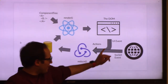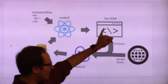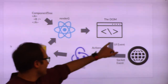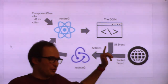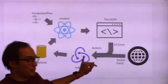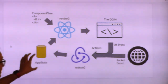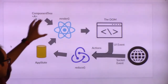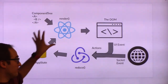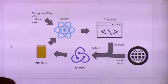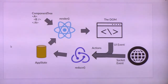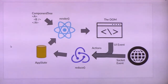Both UI events — like hitting enter or changing your nickname — and events from the socket all go into the Redux state, update the application state, and then React says hi, I have a new state, and puts it to the browser. It's a closed loop — I don't have to worry about manually changing things in the browser; I just let React do that for me.